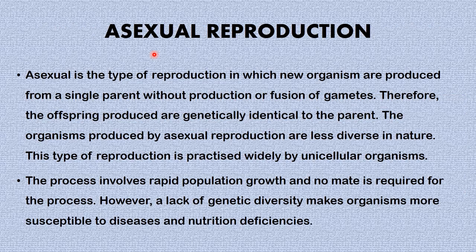Moving along, we'll be looking at asexual reproduction. Asexual reproduction is the type of reproduction in which new organisms are produced from a single parent without the production or fusion of gametes. Therefore, the offspring produced are genetically identical to the parents.